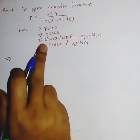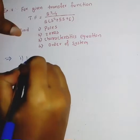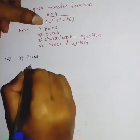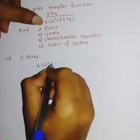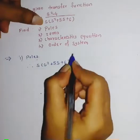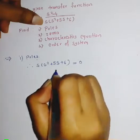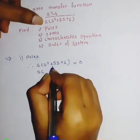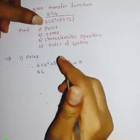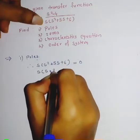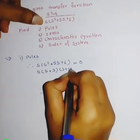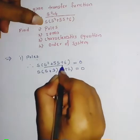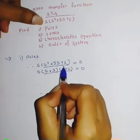First, find out the poles. Write the denominator terms equal to zero: s times (s² + 5s + 6) = 0. The term s² + 5s + 6 can be factorized into two factors, that is (s + 3) and (s + 2), so we get s(s + 3)(s + 2) = 0.